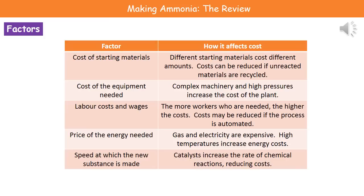The final factor is the speed at which the new chemical is made. If it's a slow process, then everything we're having to do to make the chemical has to be kept going longer, increasing costs. To reduce that cost, we can use catalysts — a catalyst speeds up the rate of a chemical reaction.